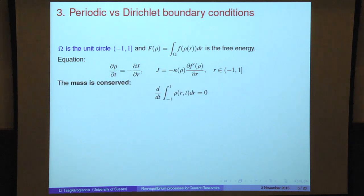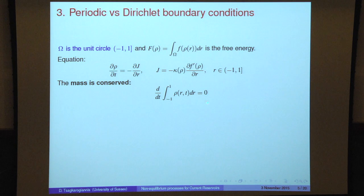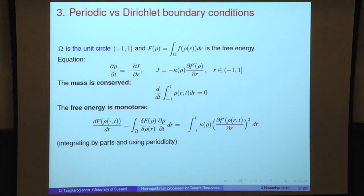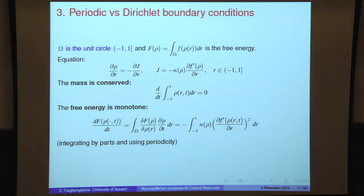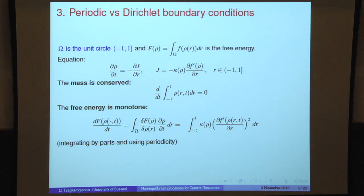With periodic boundary conditions — omega being the unit circle — the mass is conserved because if I take the time derivative using the continuity equation, I'm on the circle so the boundaries cancel and give zero. The free energy is monotone: I look at the time evolution of the free energy, take the derivative with respect to time, use the constitutive law and integration by parts. I get a quadratic part with a minus sign. Because I'm on periodic boundary conditions, rho at one equals rho at minus one, so the boundary terms give zero. I have dissipation of energy.